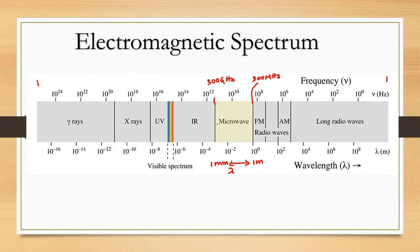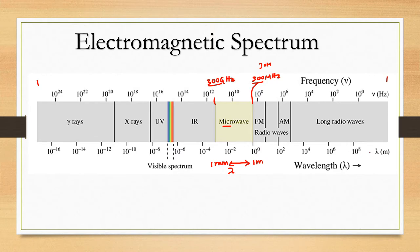Signals having a wavelength between 1 meter and 1 millimeter, or frequency between 300 MHz and 300 GHz, are called microwave signals. In some applications, 30 megahertz is also considered microwave. The name 'microwave' is symbolic, indicating that the wavelength of these signals is very small, in the range of millimeters to at most one meter, compared to lower frequencies where wavelength can be 10 to the power of 6.